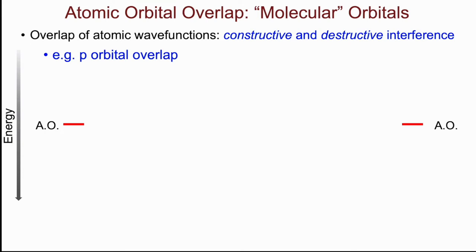Here I'm showing an energy level diagram, and on the left and the right are the two constituent atomic orbitals on the atoms, that when we bring them together, or when they approach each other, these will overlap.